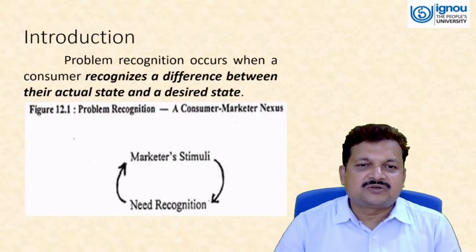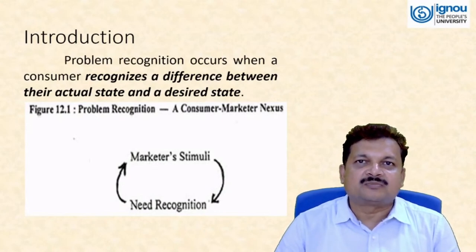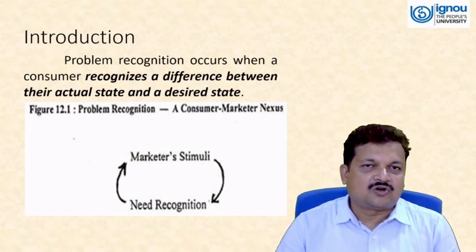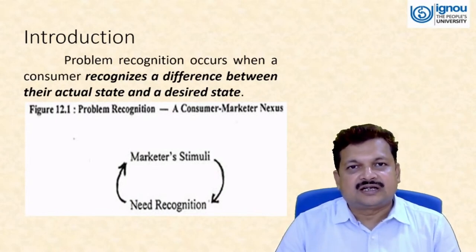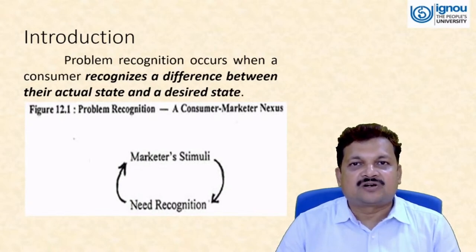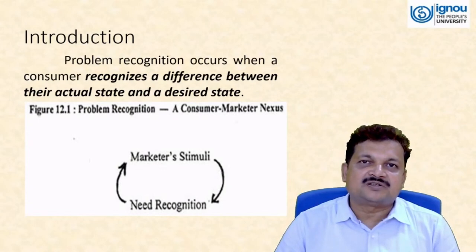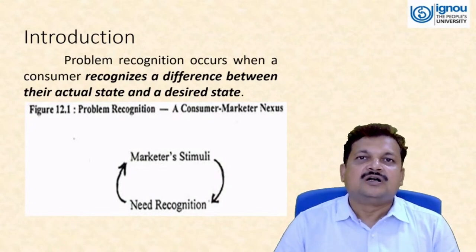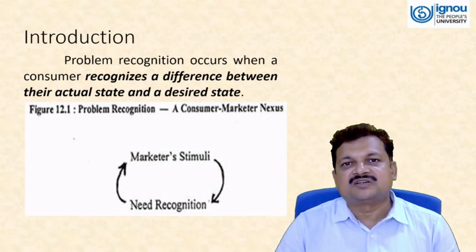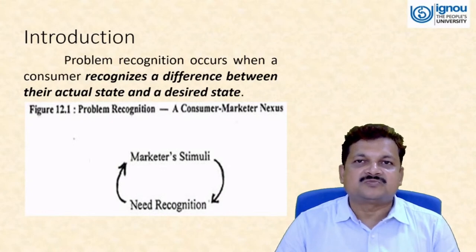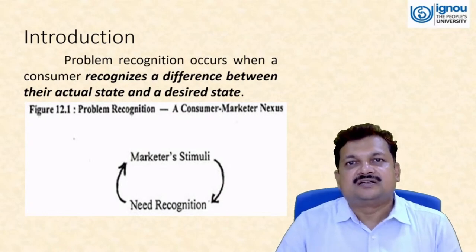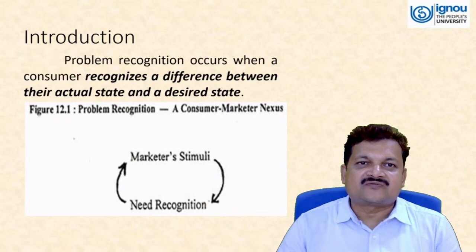Problem recognition is mostly due to external or internal stimuli. If it is external, mostly marketing stimuli — as we have seen in the Howard-Sheth model — that is marketer-dominated stimuli. Marketer-dominated stimuli refers to the different kinds of advertisements available in the market, which capture customer attention through color, pictures, celebrities, or discounts.